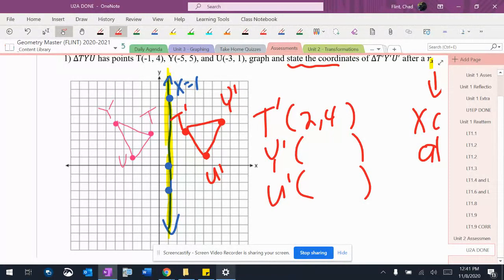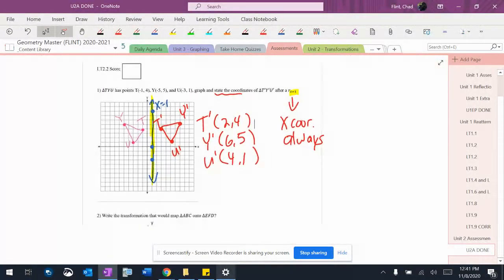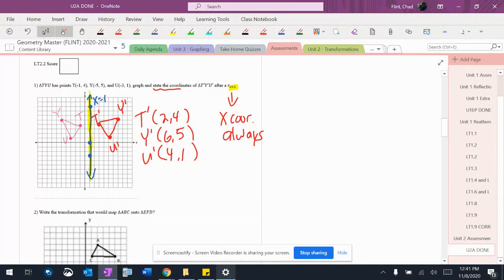U is at (4,1) and Y is at (6,5). So there they are. They're stated. They have to be stated in a problem like that for me to get full credit.